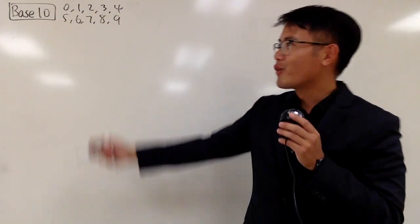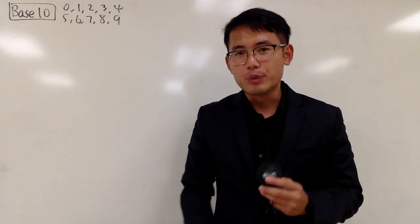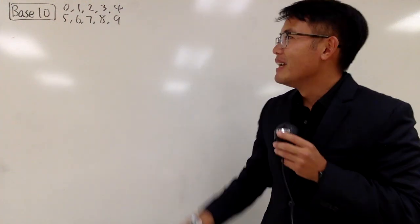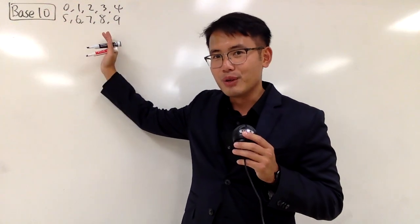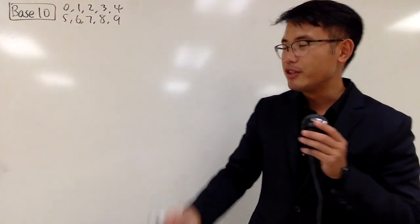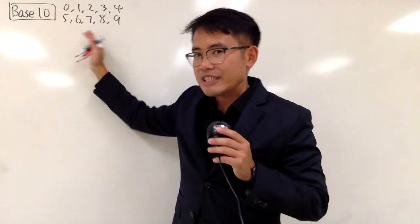I will begin with the most common base. Of course, that's base 10. That's the base that we use in real life, in daily life. What that means is that we actually have 10 digits for us to use to write our numbers, and of course, the 10 digits are 0, 1, 2, 3, 4, 5, 6, 7, 8, 9.